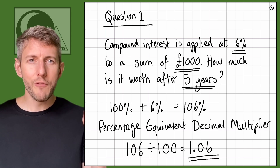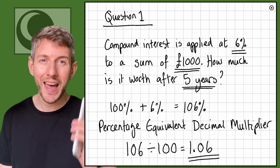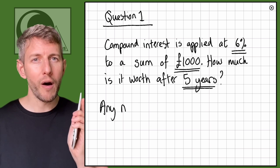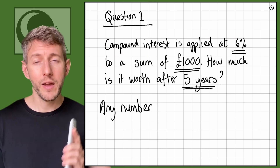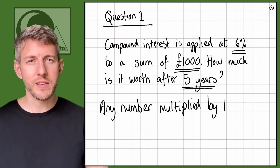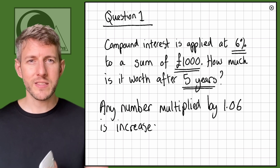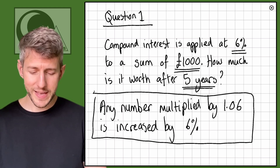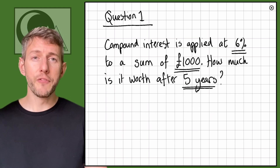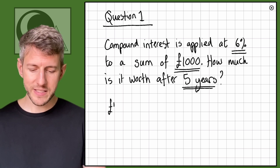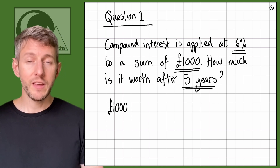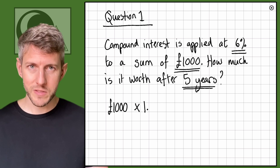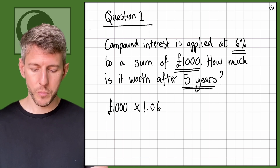Now that I've got 1.06, I have my multiplier. Any number I multiply by 1.06, I'm going to increase by 6%. So with my starting value of £1,000, if I want to increase that once by 6%, I multiply by 1.06.